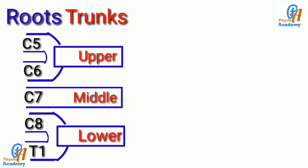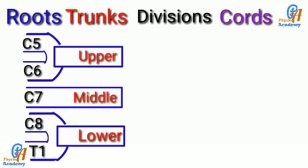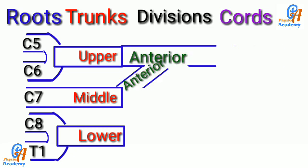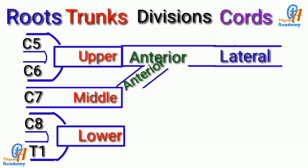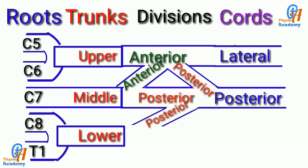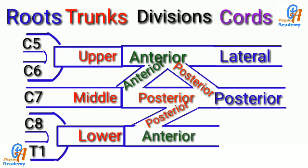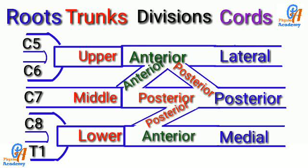Each trunk divides into anterior and posterior divisions. These divisions combine and form the cords. The anterior division of the upper and middle trunk forms the lateral cord. The posterior division of the upper, middle, and lower trunk forms the posterior cord. The anterior division of the lower trunk forms the medial cord. The lateral, posterior, and medial cords give different branches of nerves which supply the upper limb.